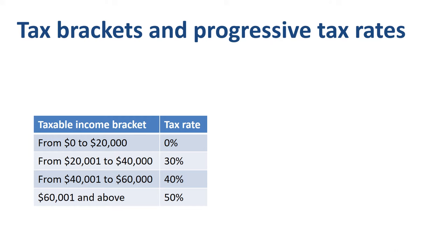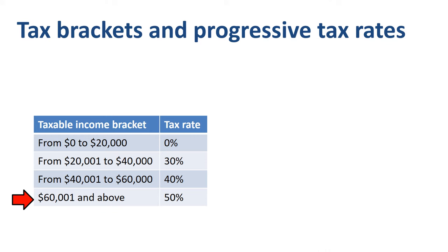An example is this table from a fictitious country called Midgard. 0% tax on your first $20,000 of taxable income, then 30% on the next bracket of $20,000 taxable income, then 40% on the next bracket of $20,000, and 50% on any taxable income above that.